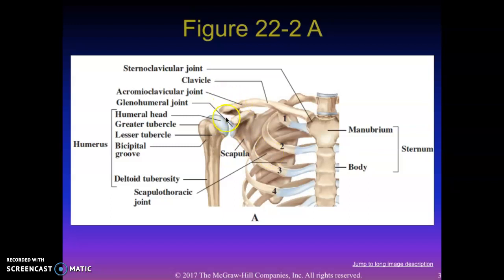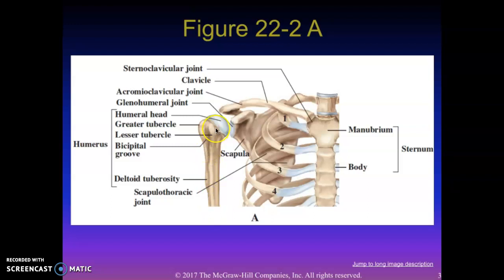We've got the acromion process, and right here is the glenoid cavity — this flat part. This round part right here is called the humeral head, and those two make a joint called the glenohumeral joint. That's usually what we're talking about when we talk about the shoulder joint — typically the glenohumeral joint, and sometimes the acromioclavicular joint. Out here we have the humerus, which we talked about when covering the elbow. That's all we really need to know for the bony anatomy.